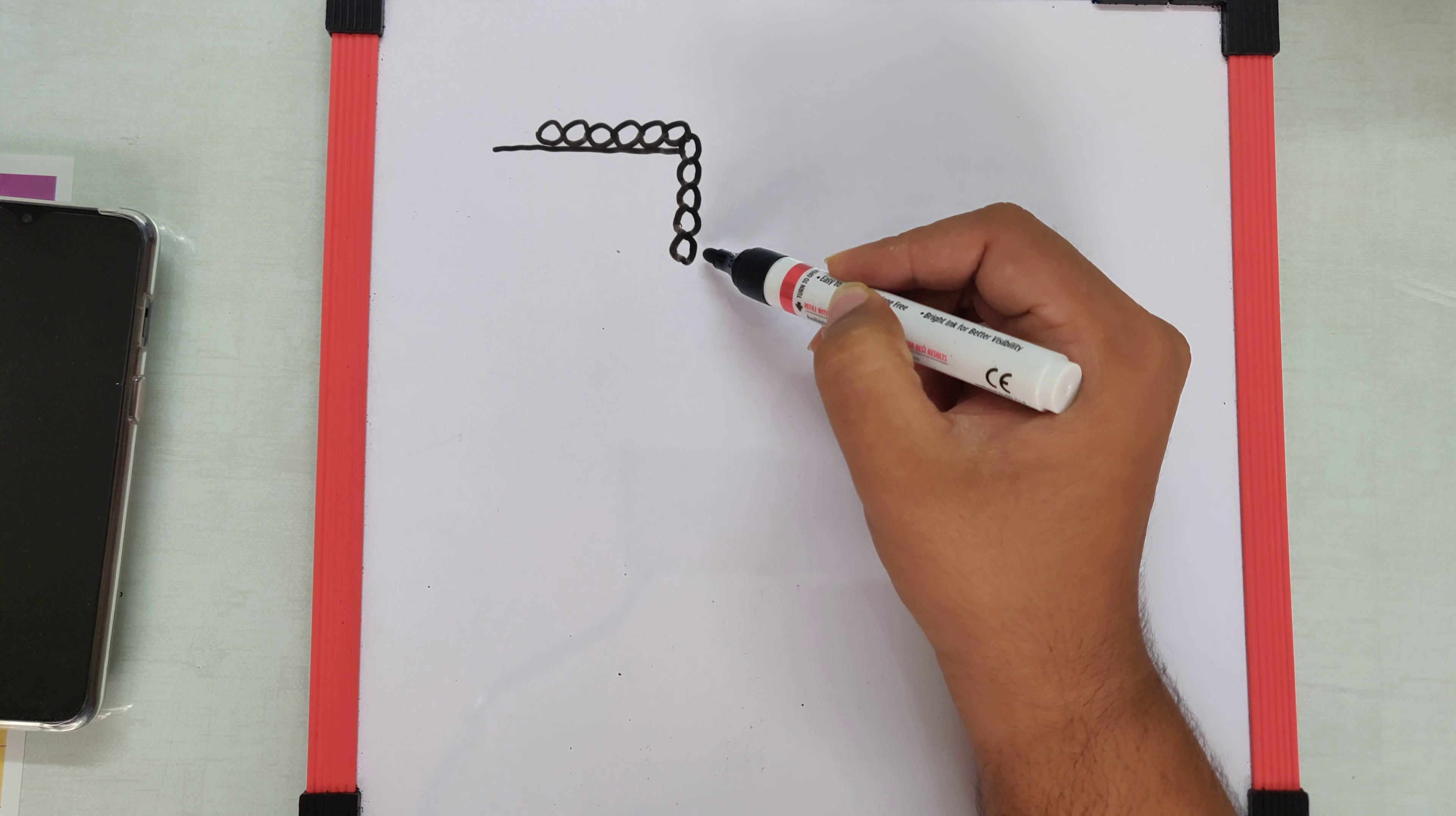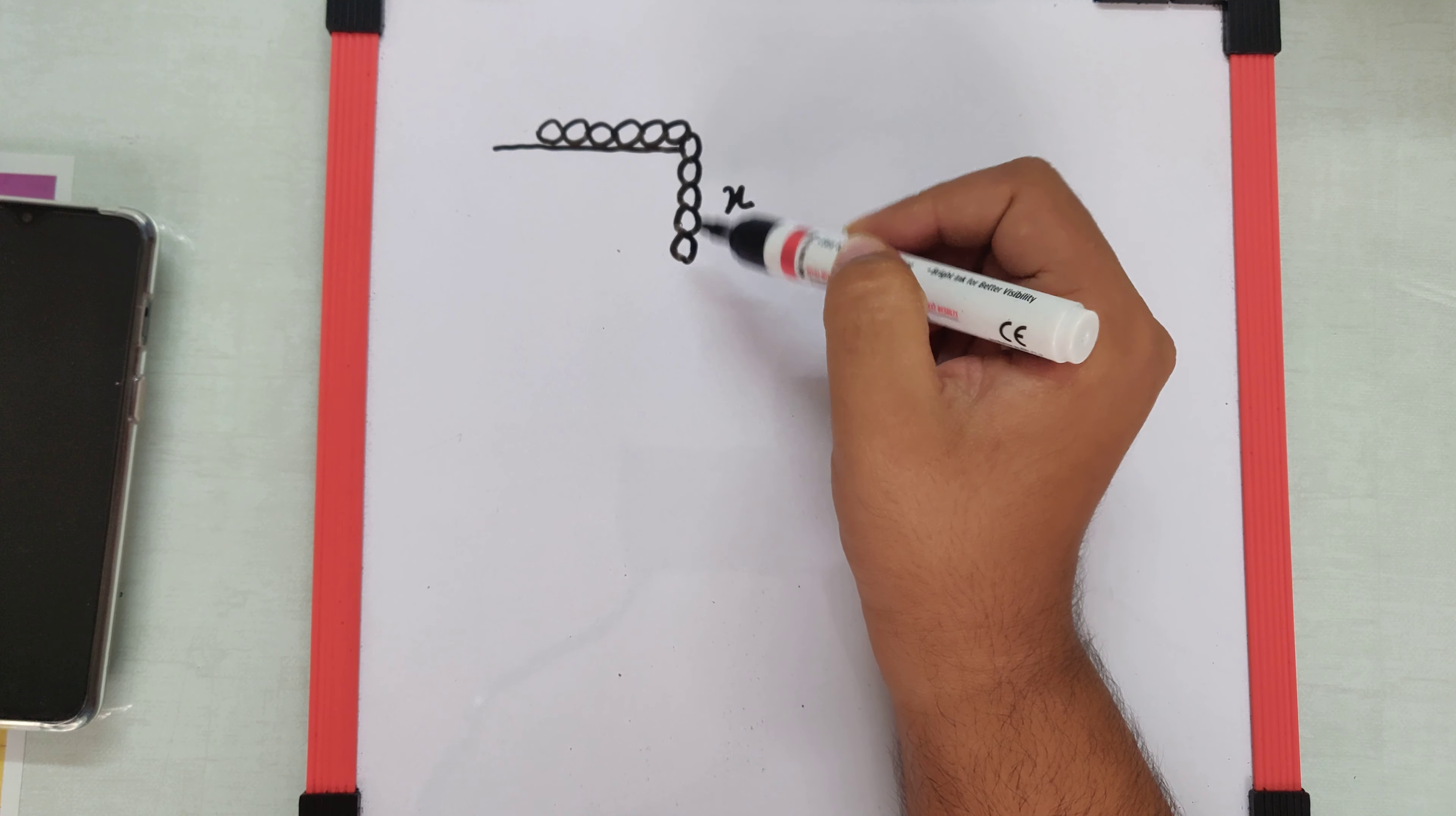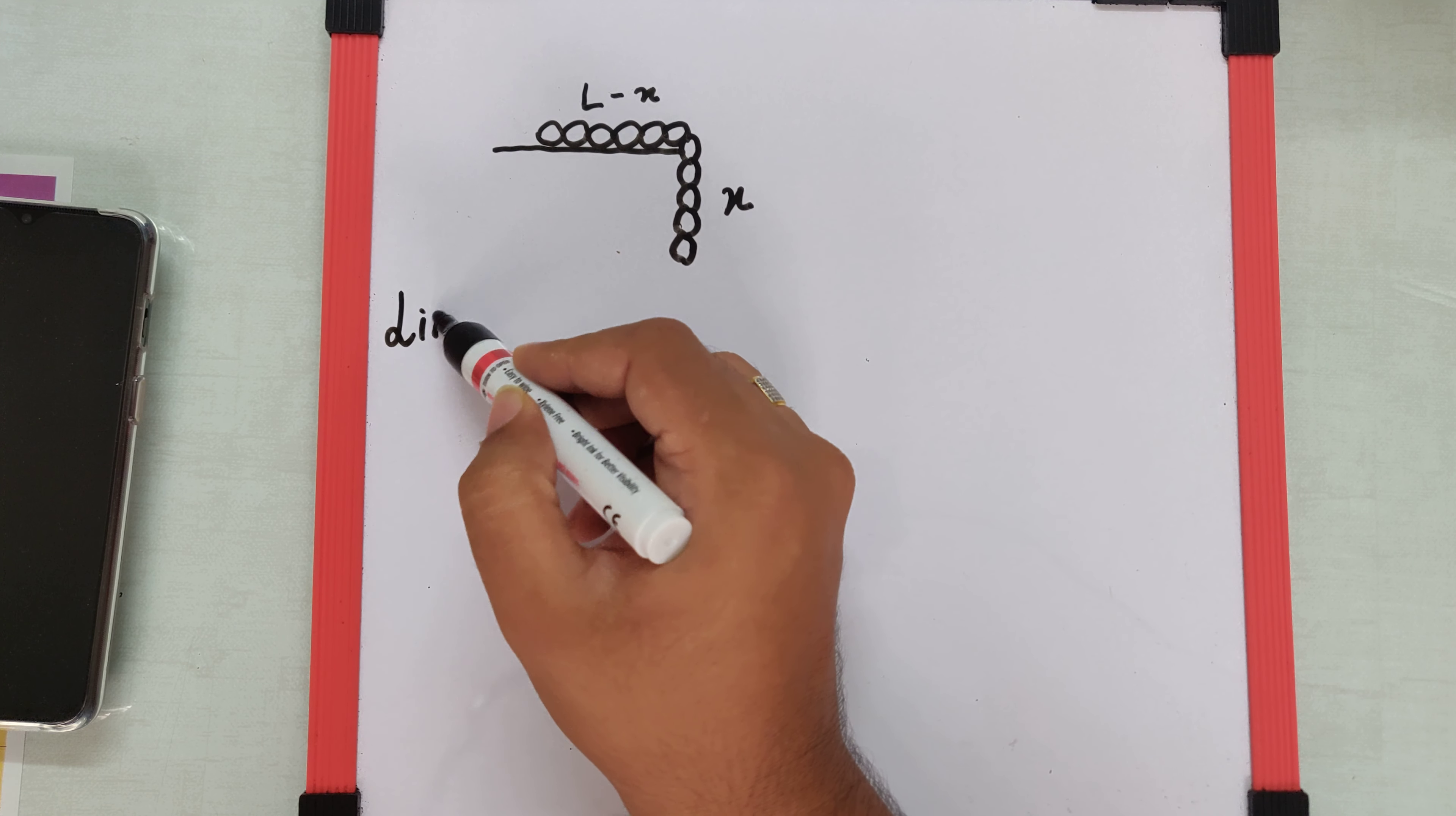So if I assume the part which is hanging as x, and the part which is on top becomes the total length minus x, so it is L minus x.